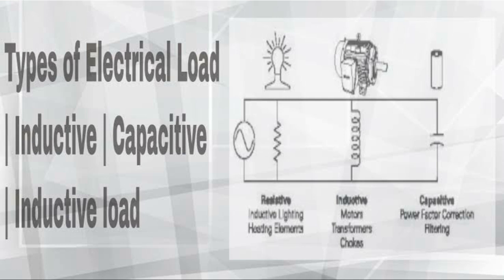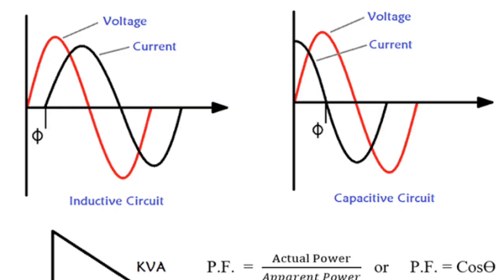Resistive loads — common examples are incandescent lamps and electric heaters. Resistive loads consume electric power such that the current wave remains in phase with the voltage wave. The power factor of a resistive load is unity (power factor = 1), meaning the phase angle phi = cos⁻¹(1) = 0 degrees. Both voltage and current remain in phase.